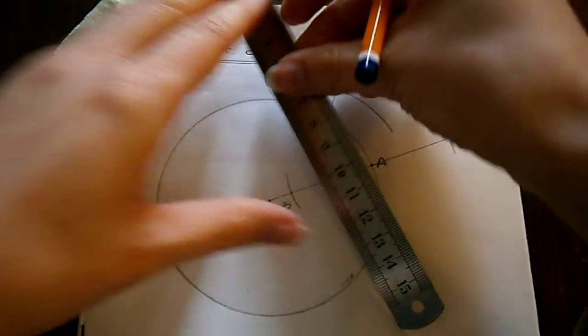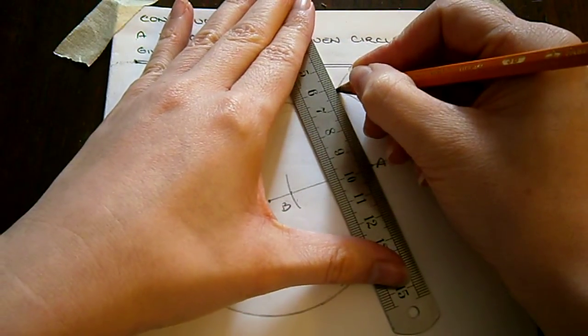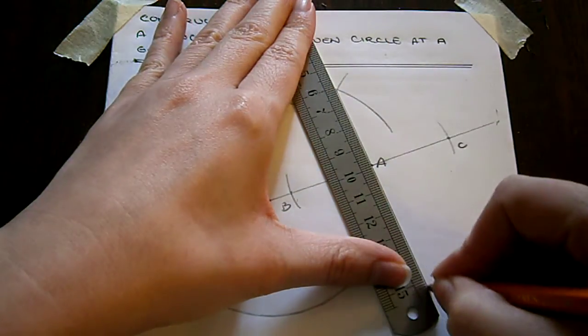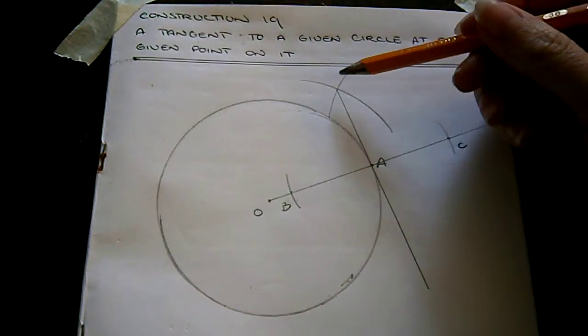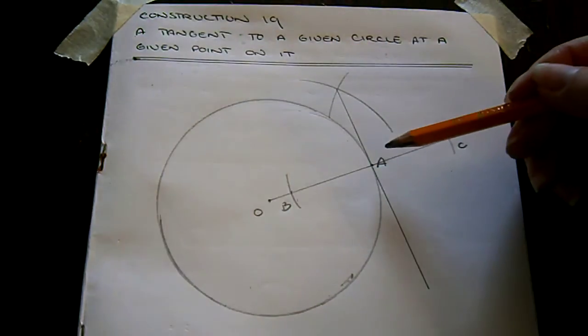We now join the intersection point between these two arcs and point A. Here we have our tangent to this circle at point A.